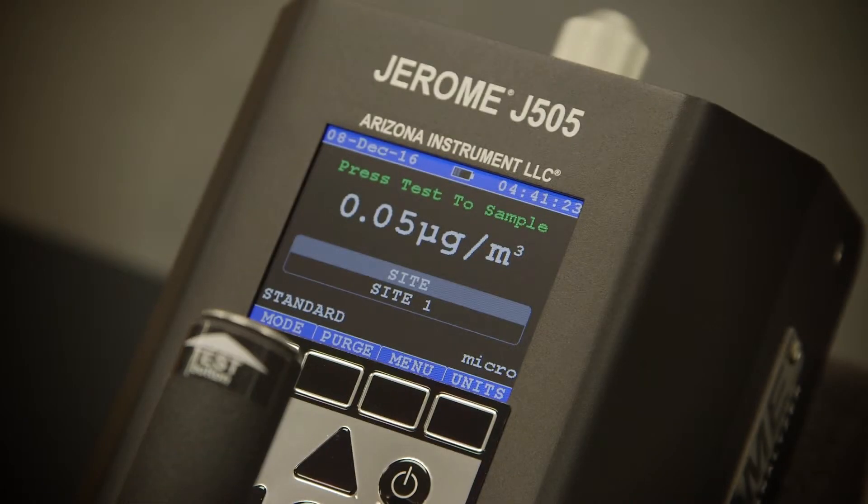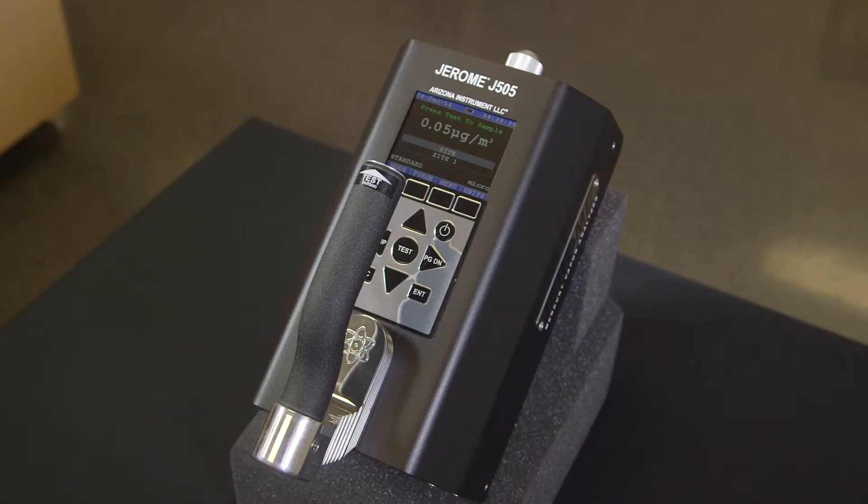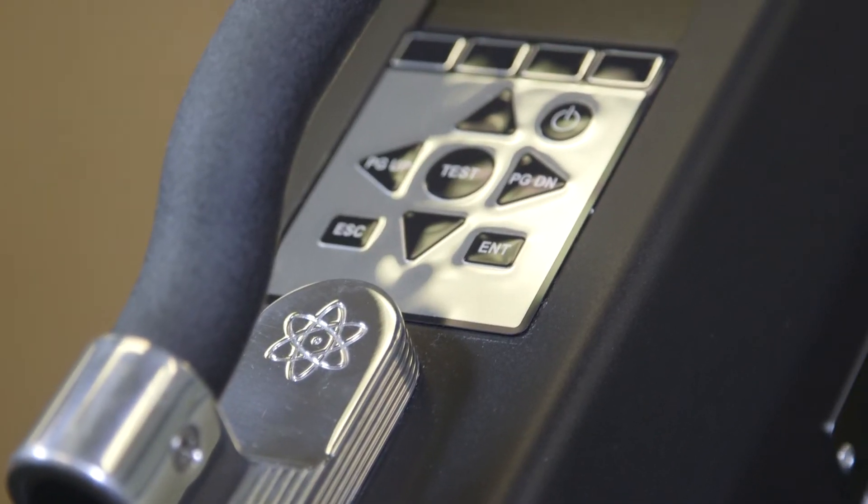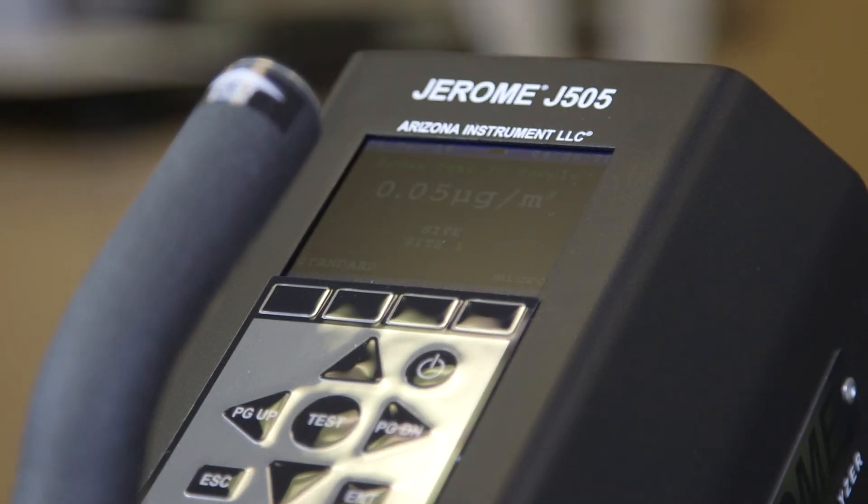With three modes of operation and three units of detection, the J505 is good for use in almost any mercury detection situation. The J505 even features a programmable auto sampling mode and has a choice of two independently programmable high limit alarms.